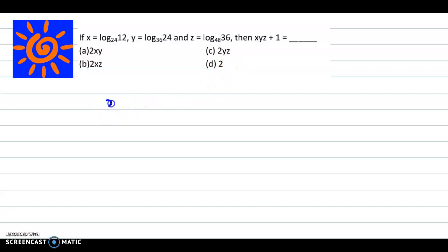Now we have to obtain the value for xyz plus 1. So let us substitute the values for x, y, and z. Now x is log of 12 to the base 24, into y is log of 24 to the base 36, into z is log of 36 to the base 48, plus 1.